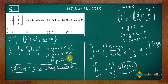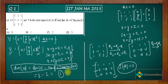We have only 2 linearly independent restrictions, so the dimension of V = 3 - 2 = 1. Therefore, option B is the correct answer; options A, C, and D are incorrect.